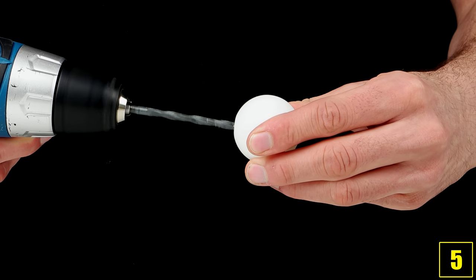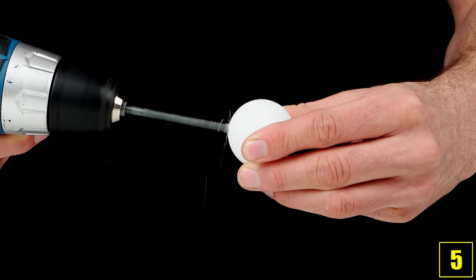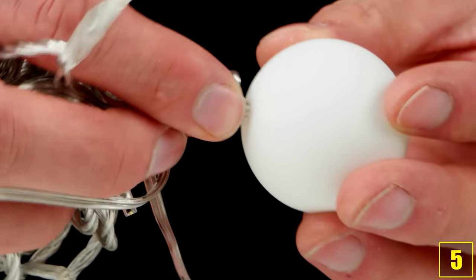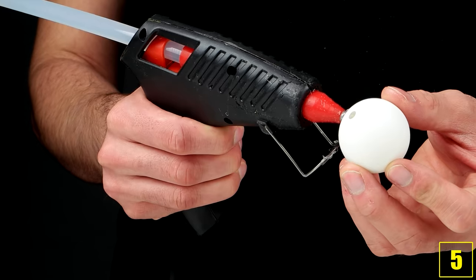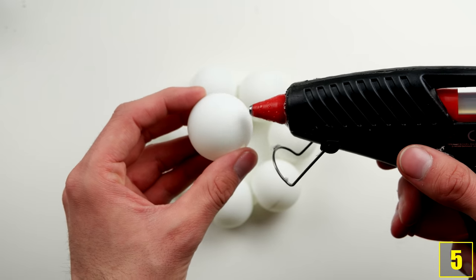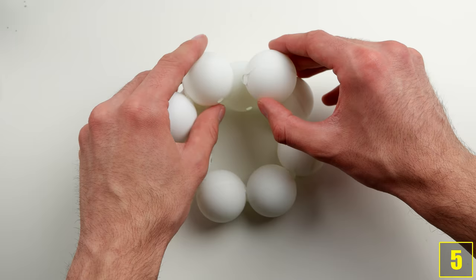And number 5. Now we'll build a lamp. Bore holes in some table tennis balls so that some fairy LED light bulbs fit in later on. Now stick the table tennis balls together in a circle with the hot glue gun and repeat this five to six times.